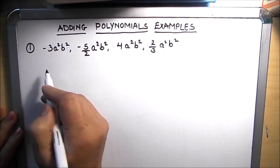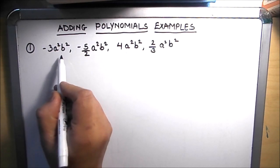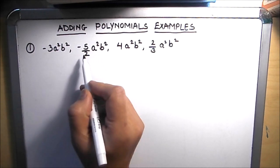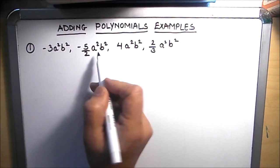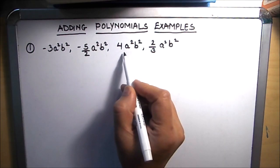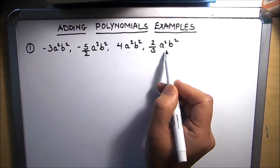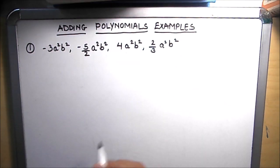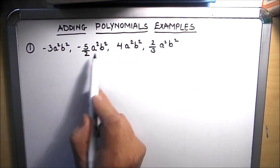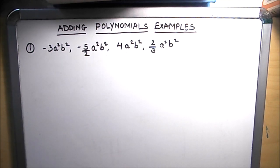Our first example is: minus 3a²b², minus 5/2 a²b², 4a²b², and 2/3 a²b². These are all monomials having the same variables a² and b².